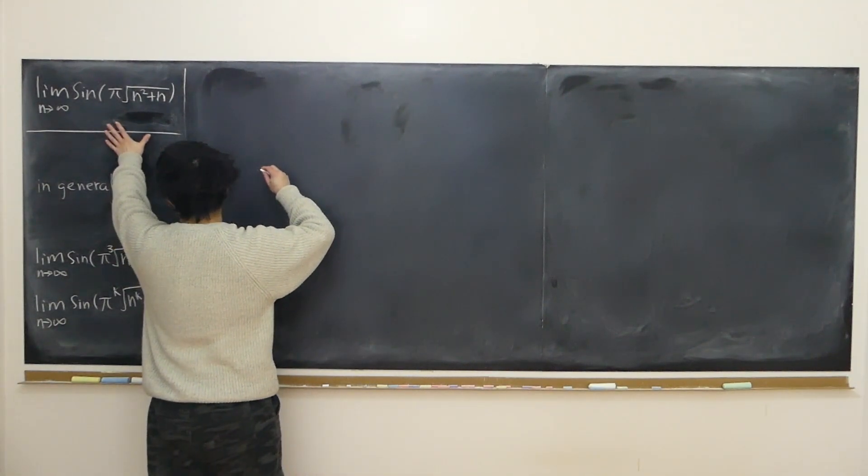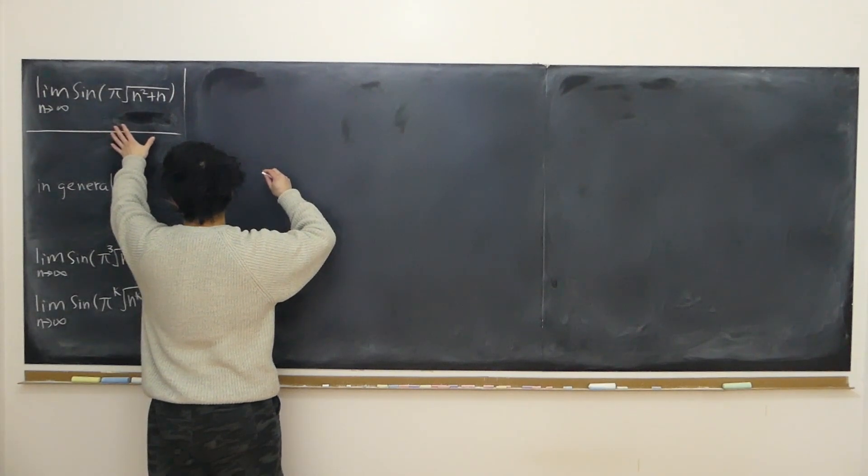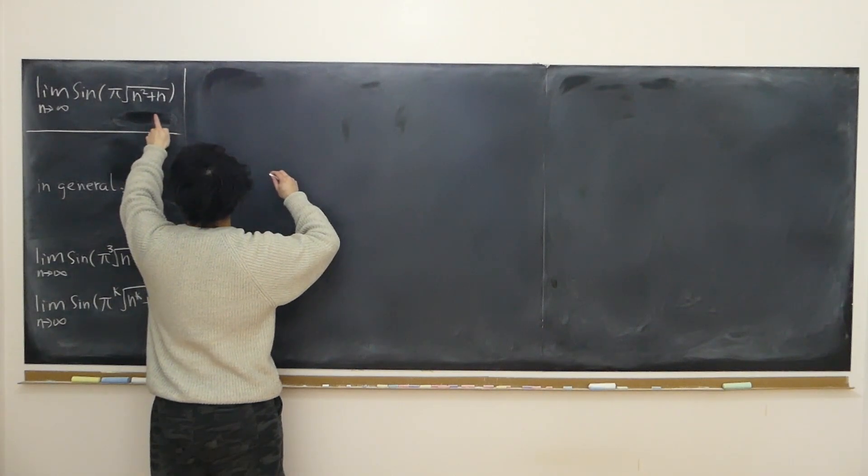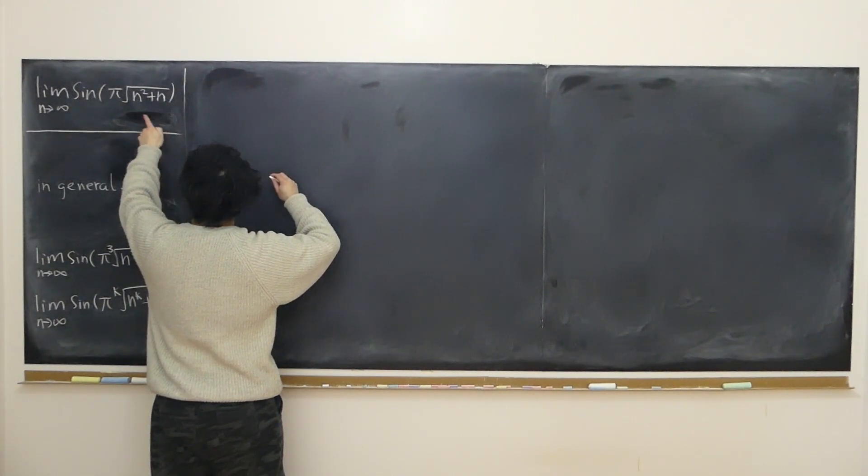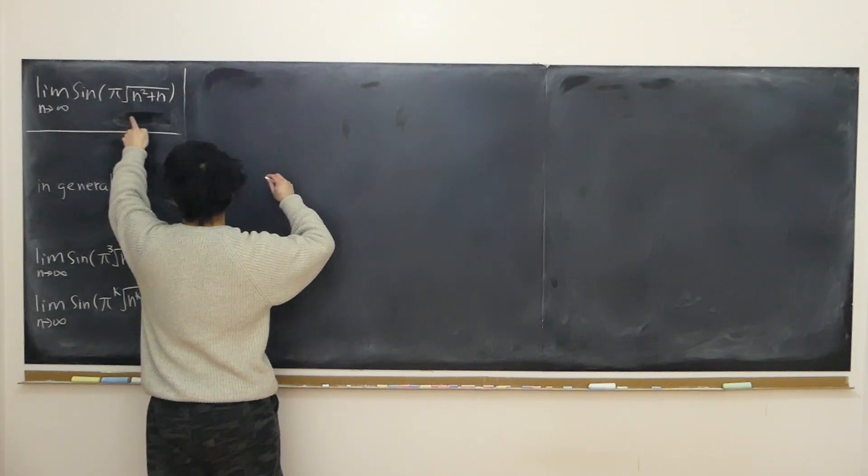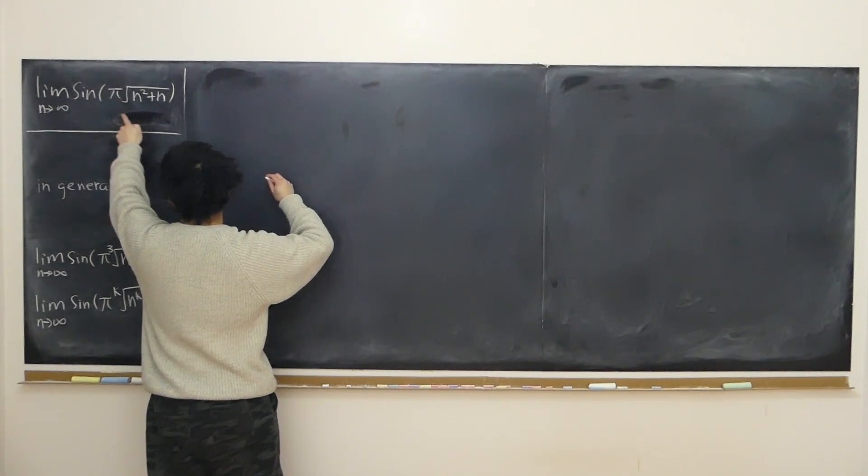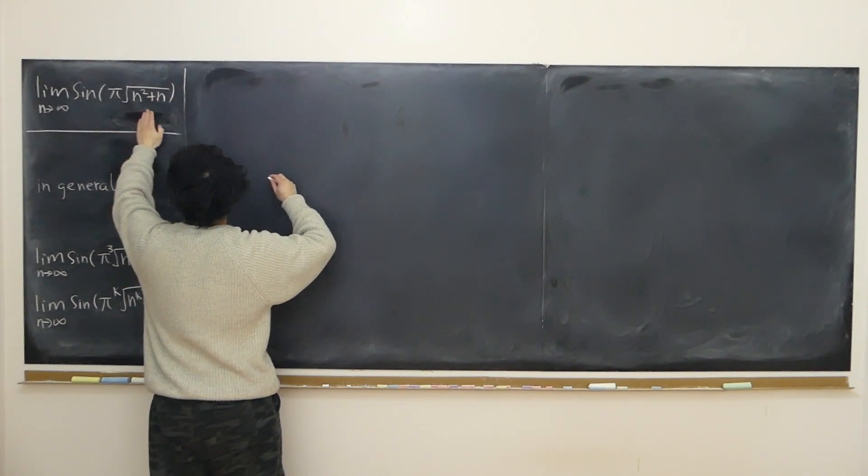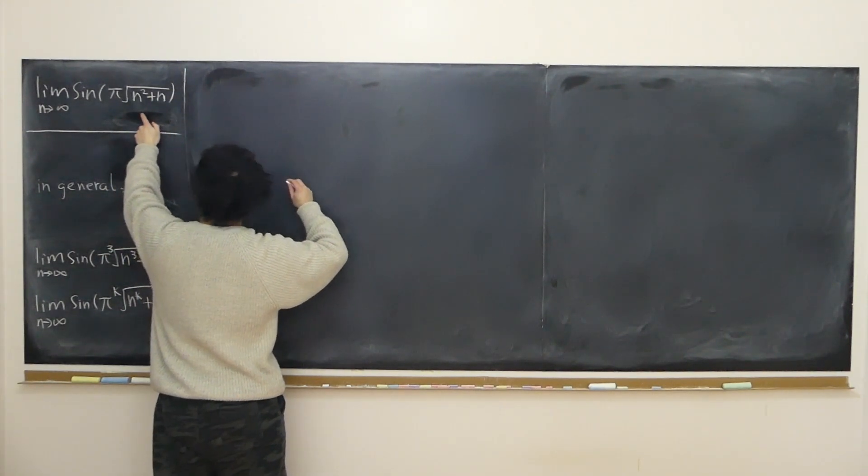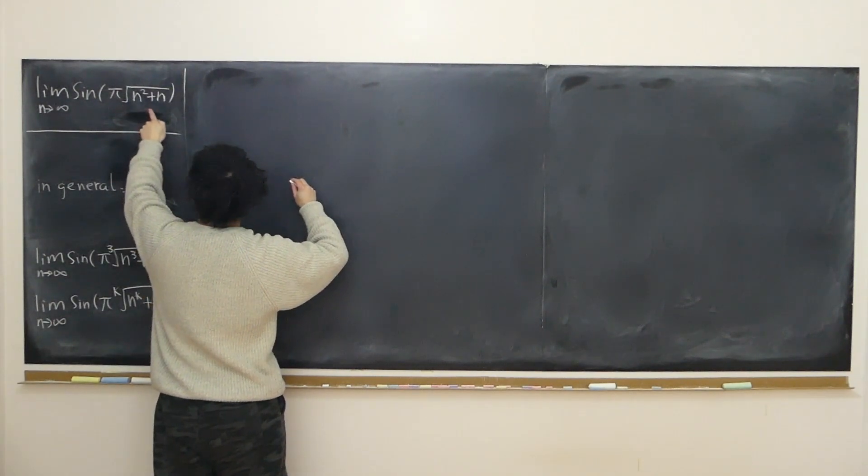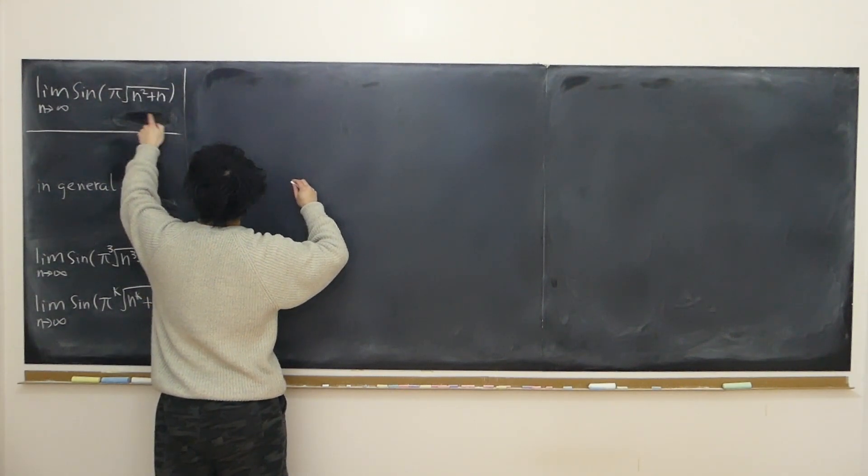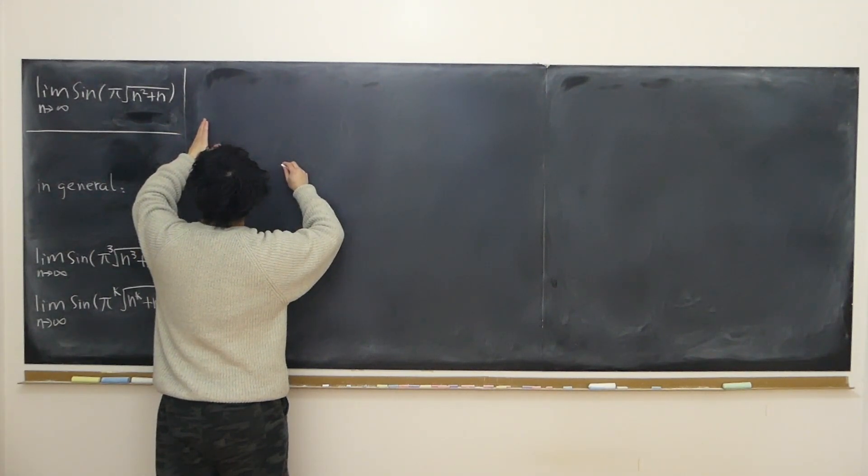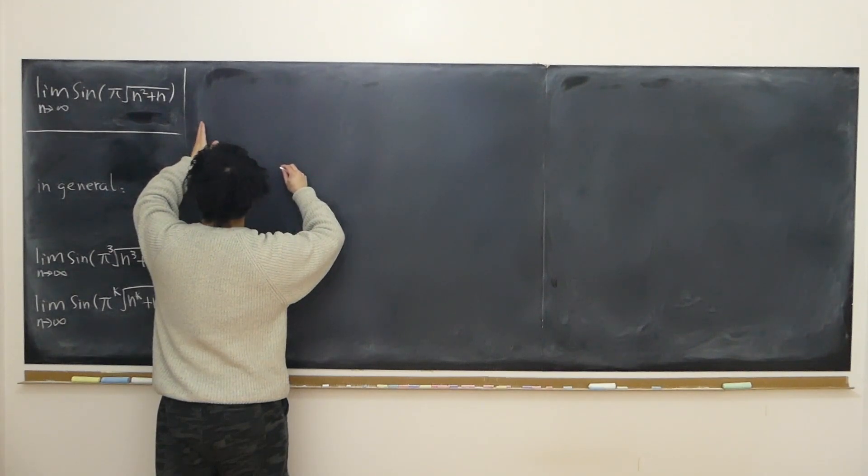For this particular question, the way to approach it is first we look at the square root of n squared plus n. We wish it were just n, therefore it will be convenient, but we're not allowed to just replace it with n. However, both approach infinity.